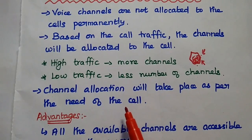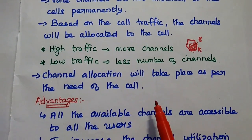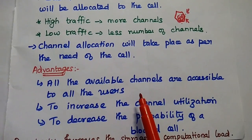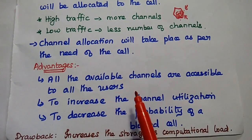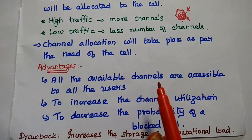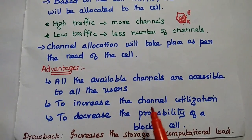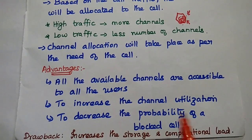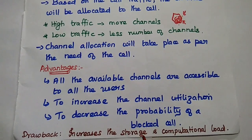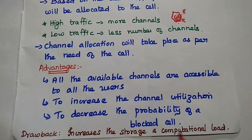Simply, channel allocation takes place as per the need of the cell. The major advantages of dynamic channel assignment are: all the available channels are accessible to all the users, thereby increasing channel utilization, and also reducing the probability of call blocking. The major disadvantage is the increased storage area and computational load required.